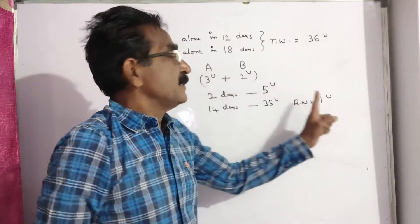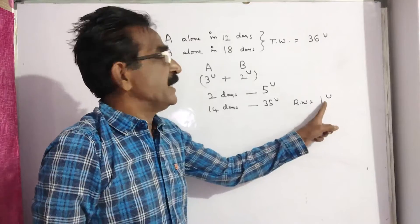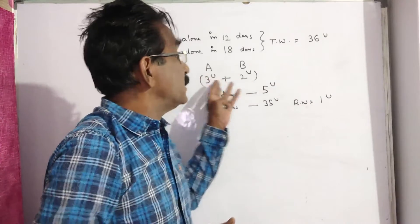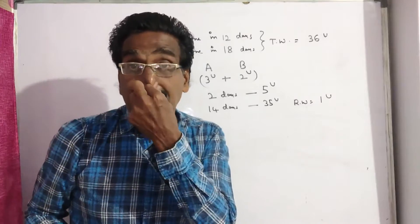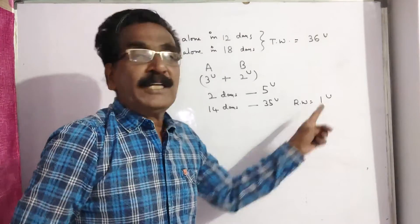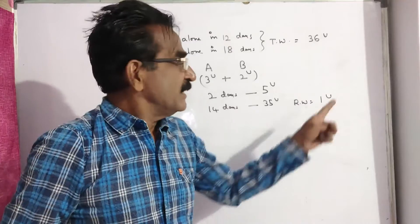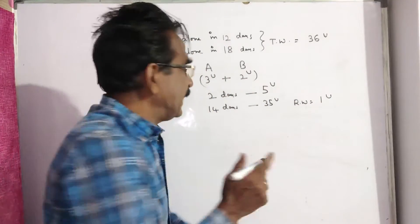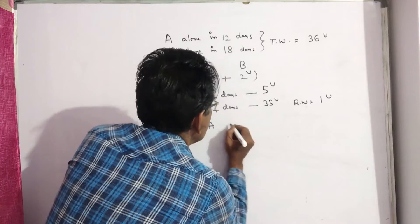On the 15th day, A comes and completes this remaining work in one-third day, because A can complete 3 units of work per day. So only 1 unit of work is remaining. This 1 unit of work will be completed by A in one-third day.